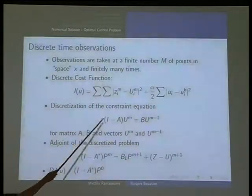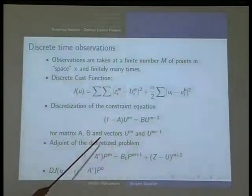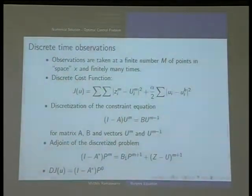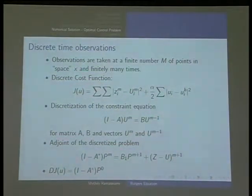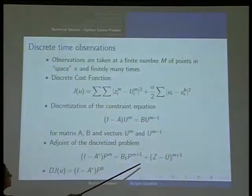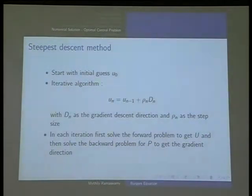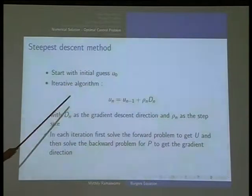This is the discrete version of the cost function. If you do discretization for the Burgers equation, we end up with the matrix equation (I - A)U^m, where m is the time step. At time step m, we have this vector U^m given by the previous solution U^(m-1). The adjoint of the discretized problem came out to be like this, and this was the derivative that we were trying to calculate. Once I know the derivative, we can do any of the conjugate gradient methods or steepest descent method, and then we can do the iteration by choosing the step size.